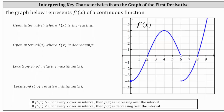We are given the graph of f prime of x of a continuous function and asked to determine where the function is increasing, decreasing, as well as the location or locations of any relative extrema. So again, this is the graph of the derivative function, not f of x.